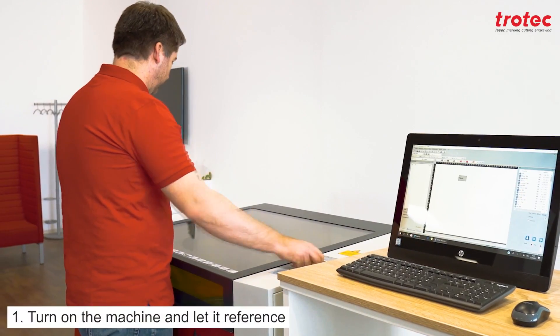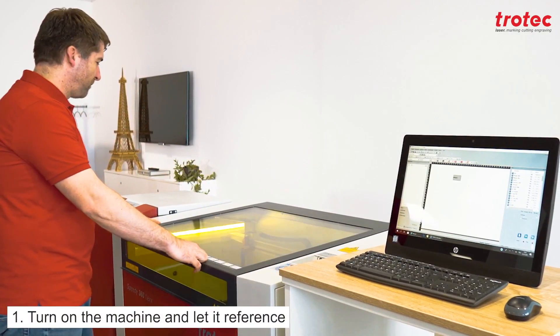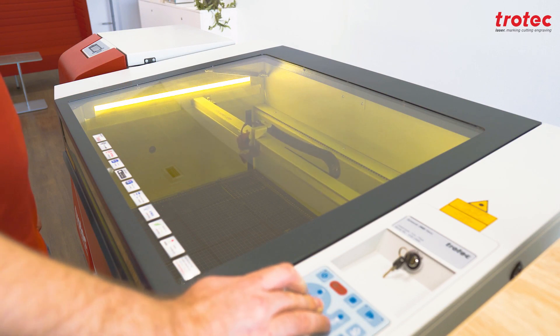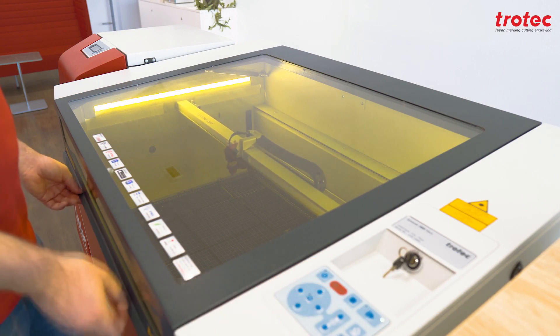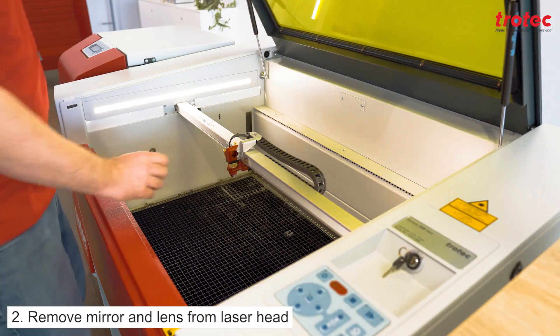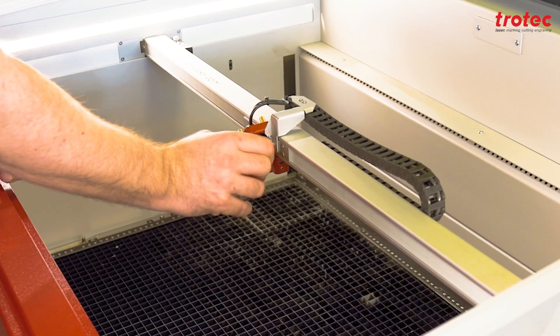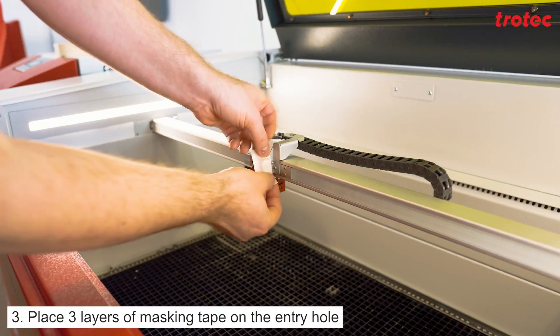First turn on the machine and let it reference. Remove the mirror and lens from the laser head. Then place three layers of masking tape on the entry hole.